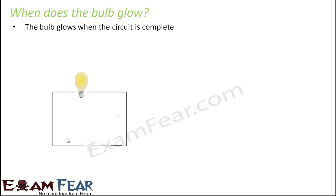So what special happens when the circuit gets completed? And why was the bulb not glowing when the circuit was incomplete? Because the circuit is nothing but a path for the current to flow. Current needs a path — it needs a route.